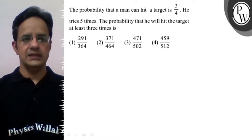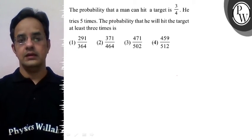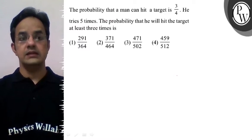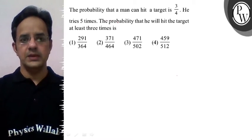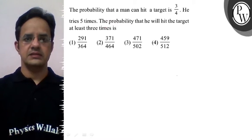The probability that a man can hit a target is 3/4 and he tries 5 times. The probability that he will hit the target at least 3 times is...